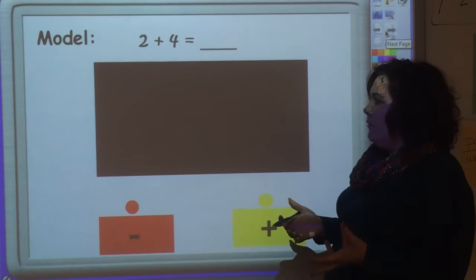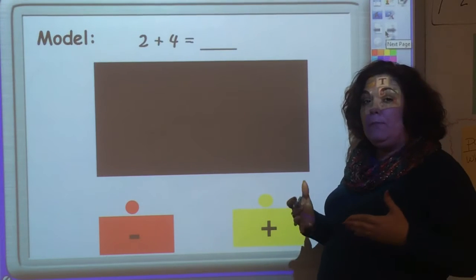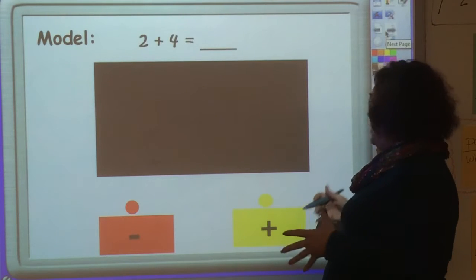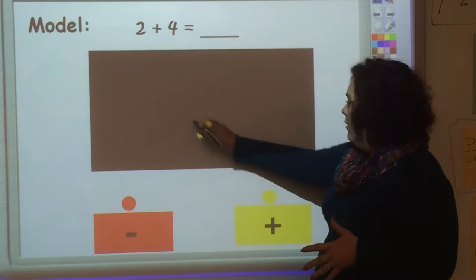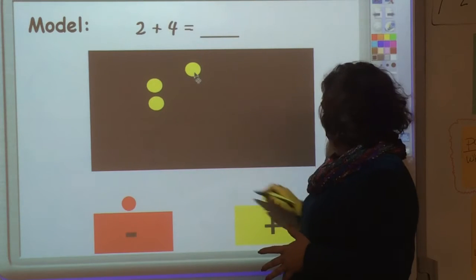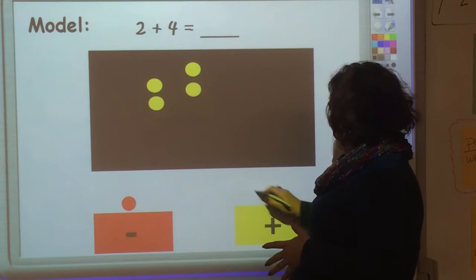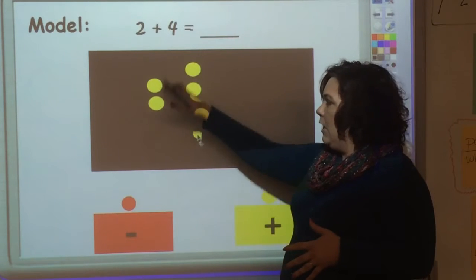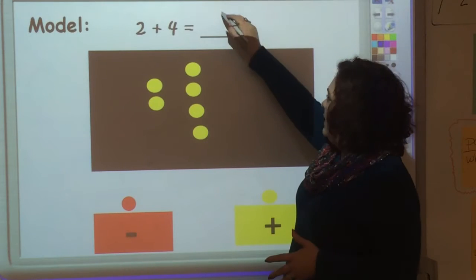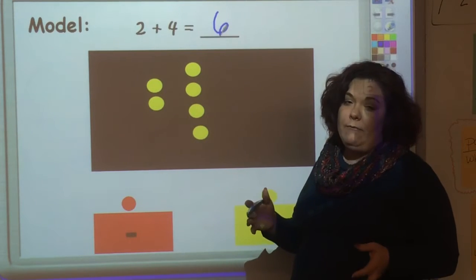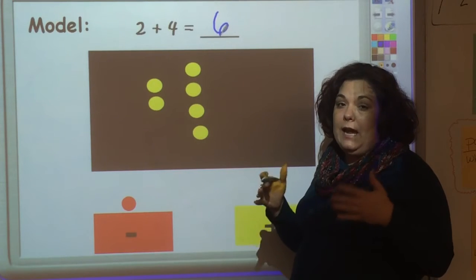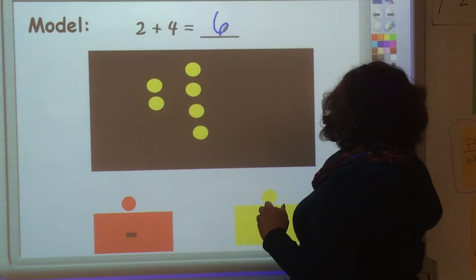If I'm going to model two plus four, well those are both understood to be positive even though there's no sign. So I'm going to grab one, two, and then I'm going to show four more. And that's a total of six: one, two, three, four, five, six. So my answer is six. We all know that. We did this in kindergarten, but it's important to start looking at with the models what it looks like.